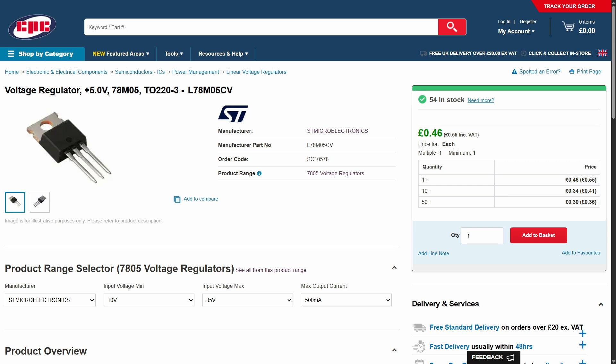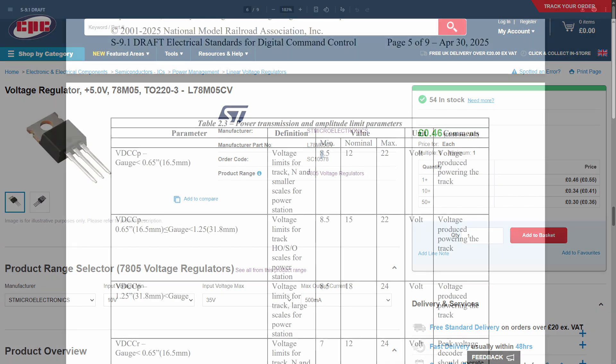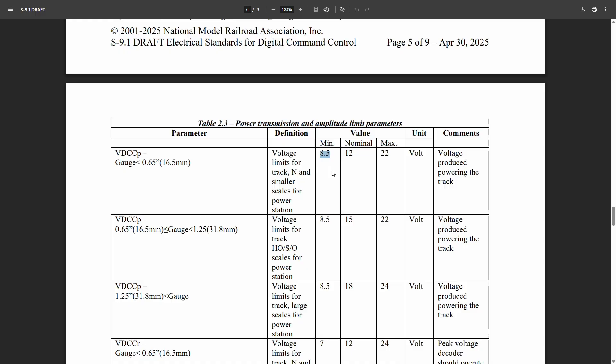For the higher power, I switched to a 5V voltage regulator. This is still well below the minimum 8.5V that the DCC systems are required to supply to the track for N-Gauge, so there should always be enough power.